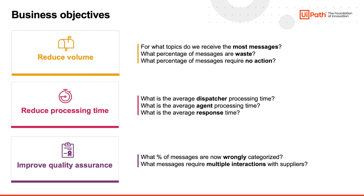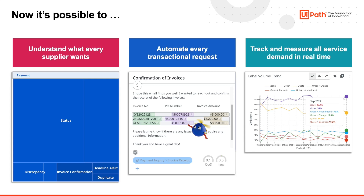Commonly, we see the following three objectives for helpdesk. For reducing the overall message volume, you need to understand the main request types, but also which messages require no action, such as thank you notes. For lowering the processing time, you need to understand how much time you're spending on identifying the message's intent, capturing invoice numbers, and processing them in the ERP. For improving quality, you need to correctly categorize messages and avoid back-and-forth replies. You can now turn emails from unstructured text into structured data, on which you can report and build automations. This helps you to elevate your relationships to partnerships.